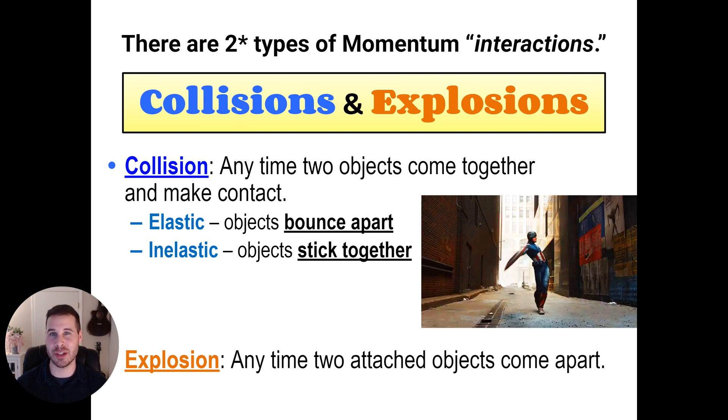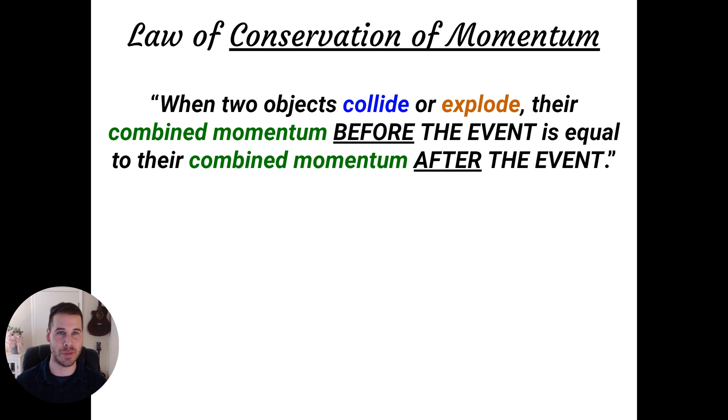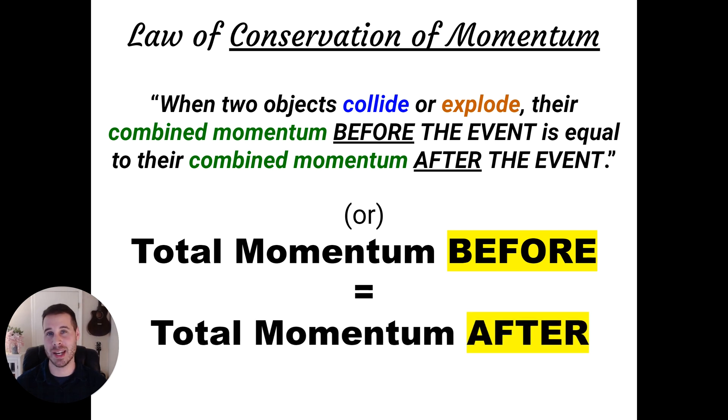So now that we know the two or technically three types of interactions that we're going to see that momentum can help us to understand, let's learn about how momentum behaves in these interactions. That's going to lead us to the law of conservation of momentum. The law of conservation of momentum is very similar to the other conservation laws that you've already learned in physics, like the law of conservation of energy and of matter. A conservation law basically says that all the stuff that exists before your observation is equal to all the stuff that exists after your observation. So in this case, the thing we observe is going to be a collision or an explosion. Here's a long way of explaining the law of conservation of momentum, and I'll follow it up with a short way. When two objects collide or explode, their combined momentum before the event will always be equal to their combined momentum after the event. This is a long way of saying the total momentum in a system before the event will always be equal to the total momentum in a system after the event.